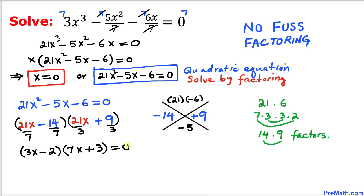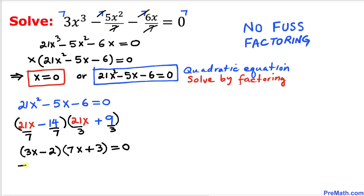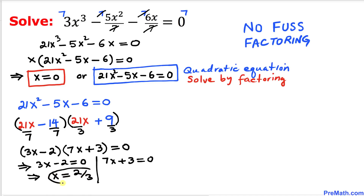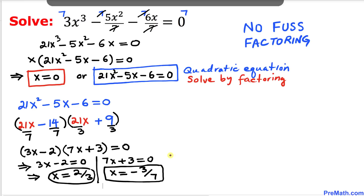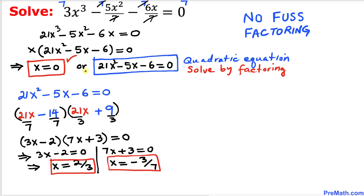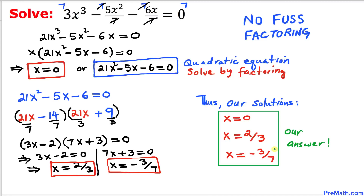Now let's solve for x. Splitting the factors: 3x minus 2 equals 0 gives x equals 2/3, and 7x plus 3 equals 0 gives x equals negative 3/7. So we have three solutions: x equals 0, x equals 2/3, and x equals negative 3/7. Those are our three solutions and that's our final answer.